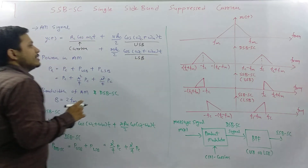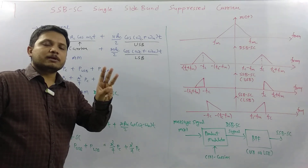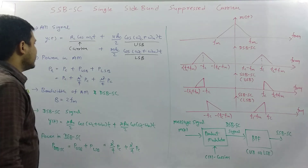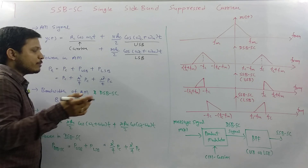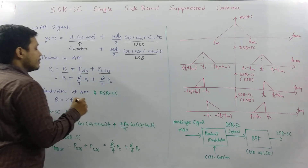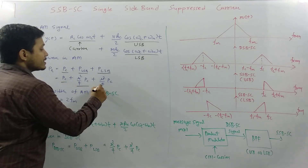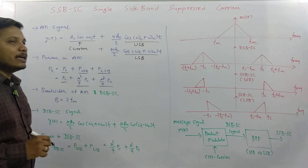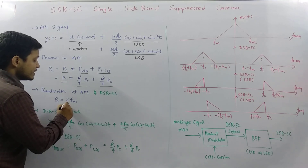In an AM signal we send three different components: carrier signal, upper sideband, and lower sideband. Regarding power transmission, there are three components — carrier power PC, upper sideband power mu-squared over 4 times PC, and lower sideband power mu-squared over 4 times PC. The bandwidth of the AM signal is 2FM.